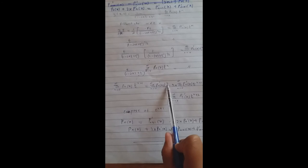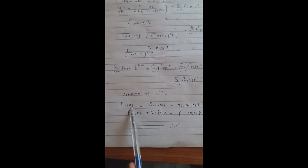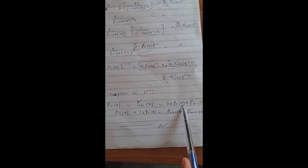Here we have t power n, replacing n with n+1, and here t power n+2, replacing n with n-1. Comparing the coefficient of tⁿ⁺¹, we get n·P'n(x)·tⁿ⁺¹. Moving the term to the left-hand side, we obtain: Pn(x) plus 2x·P'n(x) is equal to P'n₊₁(x) plus P'n₋₁(x). Hence proved.